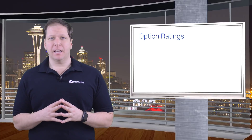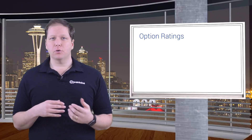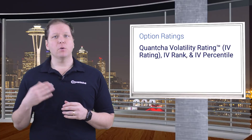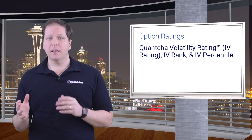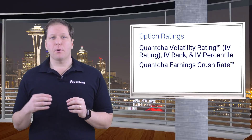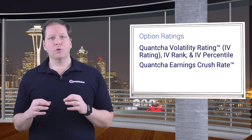Our options rating dataset is designed for options investors who focus on trading volatility. We provide a set of volatility valuation metrics, including our proprietary IV rating. We also provide comparable IV rank and IV percentile metrics. This dataset includes our proprietary earnings crush rate, which extracts the market's expected volatility crush following the next earnings announcement. We also include our proprietary liquidity rating.